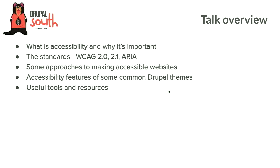So what am I going to cover in this talk? I'm going to talk about accessibility and why it's important. I'll cover three standards: WCAG 2.0, 2.1 — which is new in web accessibility terms, ratified June 2018 — and WAI-ARIA. I'll also talk about approaches to making websites more accessible, look at accessibility features of front-end frameworks and common Drupal themes, and show some useful resources and tools. I'll be making these slides available so you can get these links.